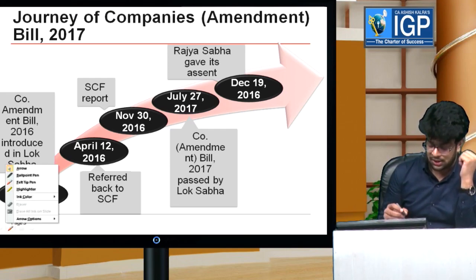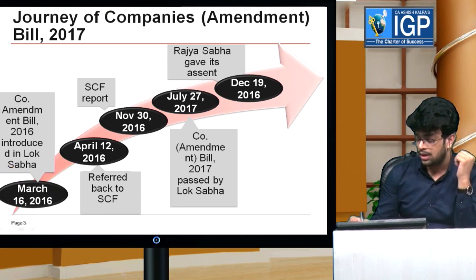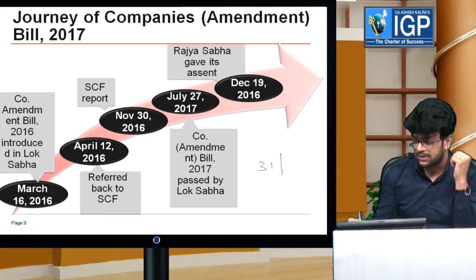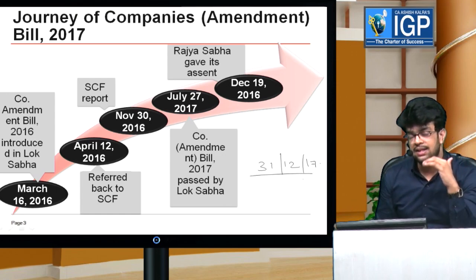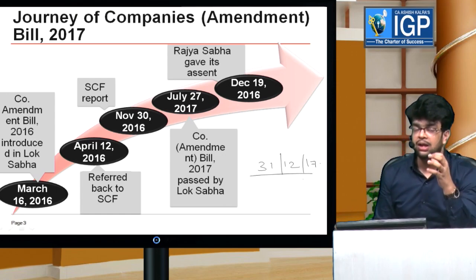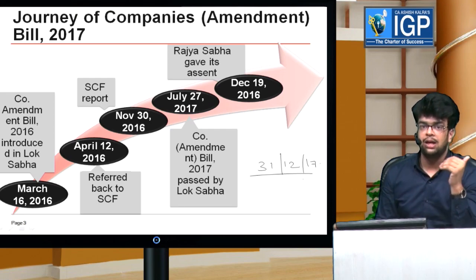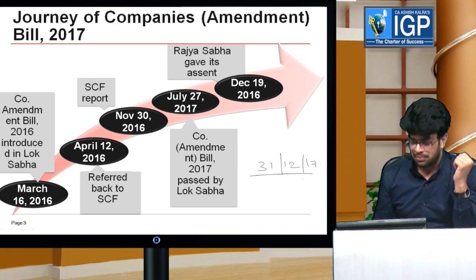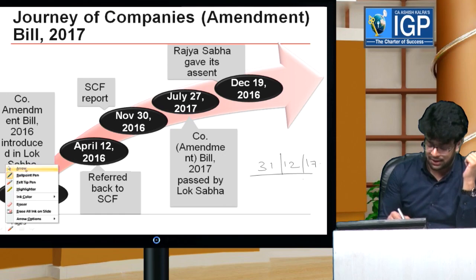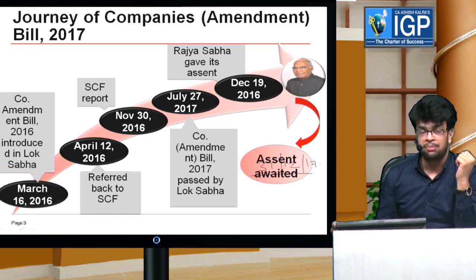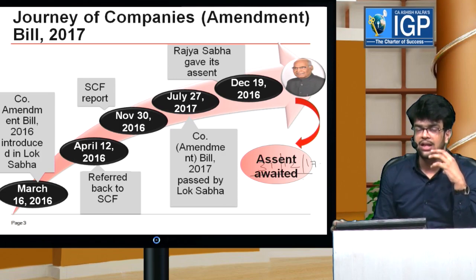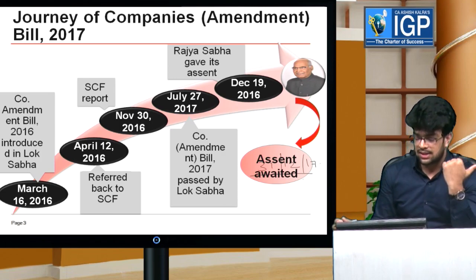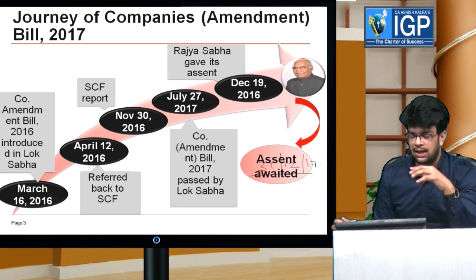Now, here is a very important observation for our CS students. If by December 31, 2017, the President had given his assent, then it would be applicable for our June 2018 attempt. But this is our President's gift — this amendment act has not yet been passed; his assent is awaited. Therefore, for June 2018 attempt students, this amendment bill is not applicable.